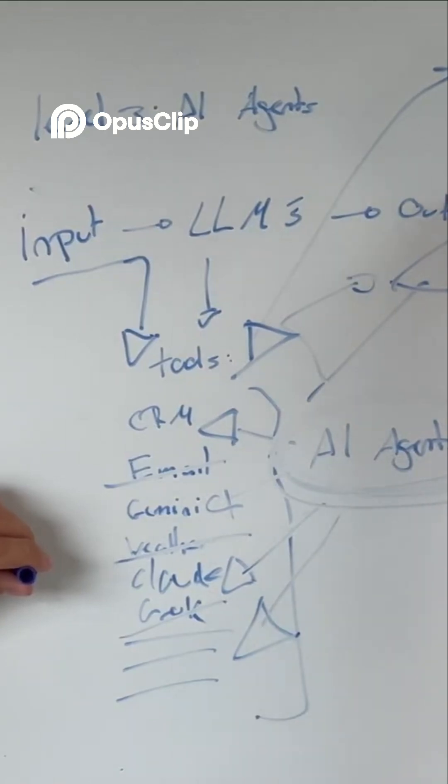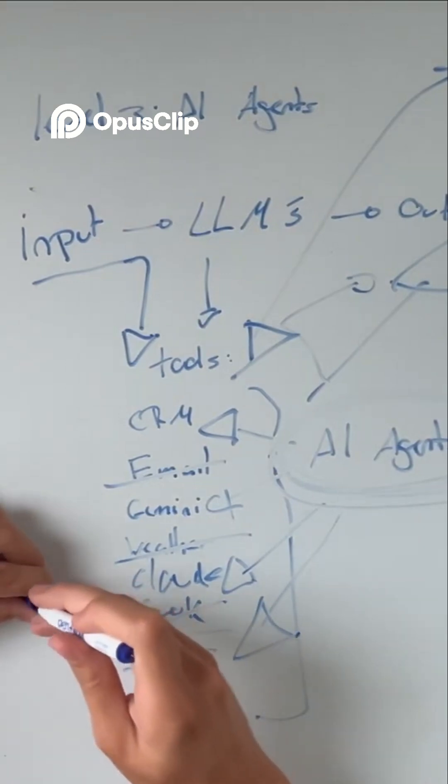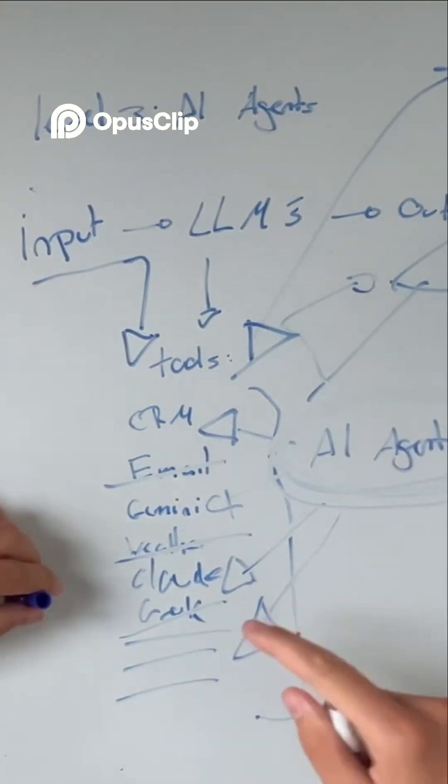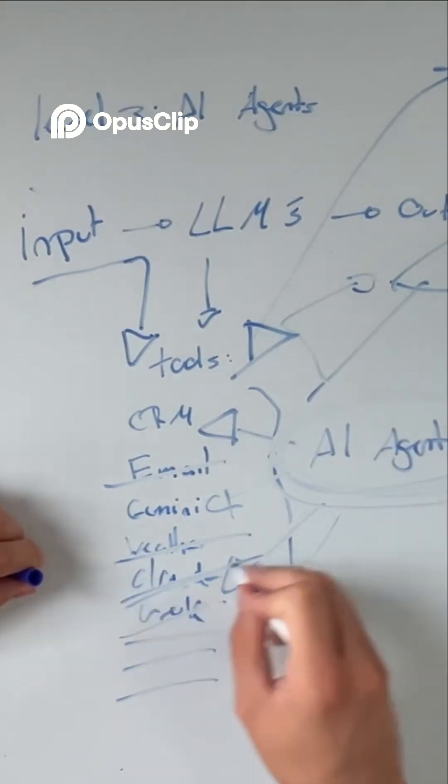If it's not, it will tell this one and it's going to say okay take another path because the output sucked. So now this one is going to, for example it used Claude, it will not use Claude in this one.